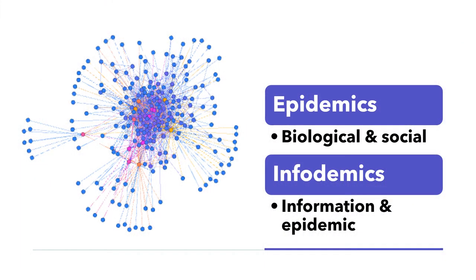In this video, we'll learn the network science of epidemics and infodemics. The topic of epidemics is a combination of biological issues and social issues. Infodemic refers to an overabundance of information, some accurate and some not, rendering it difficult to find trustworthy sources of information and reliable guidance. What's in common between epidemics and infodemics? It is the infrastructure that allows the spread of diseases and information, and this infrastructure is the network we've been studying this semester.